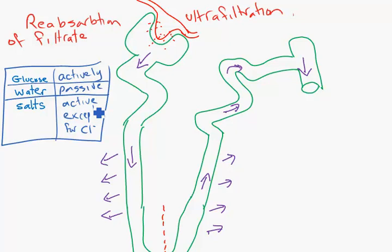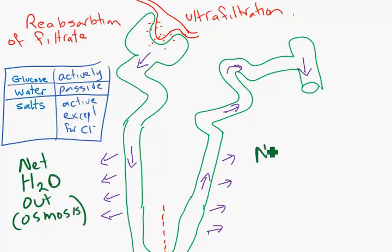As we move down here, we should know there's an overall net movement of water out, which is osmosis. On this side, there's a net movement of salts out. And that's a combination of active and of passive movement.